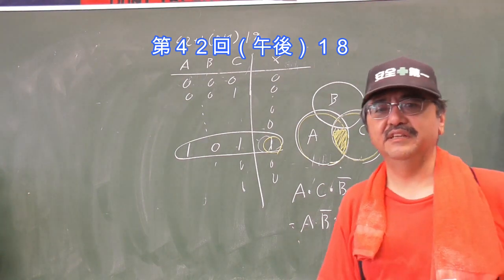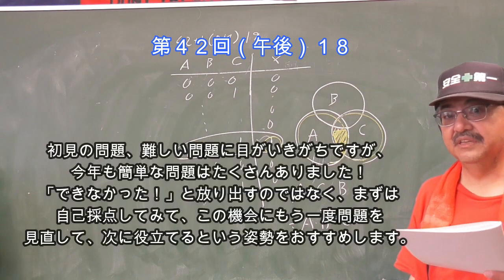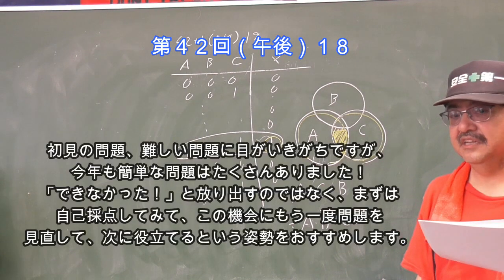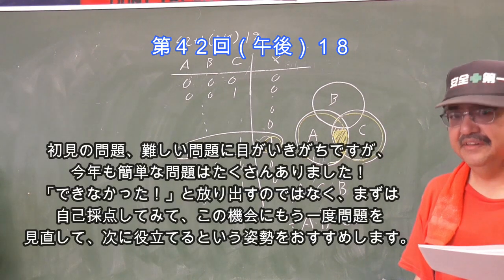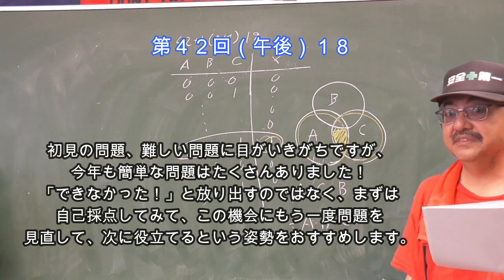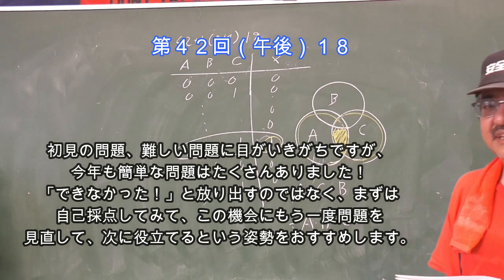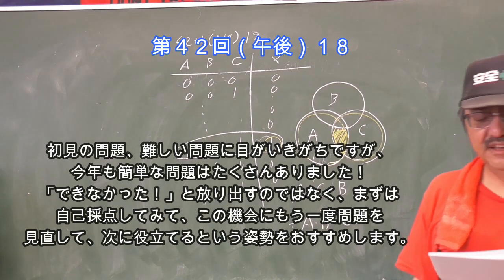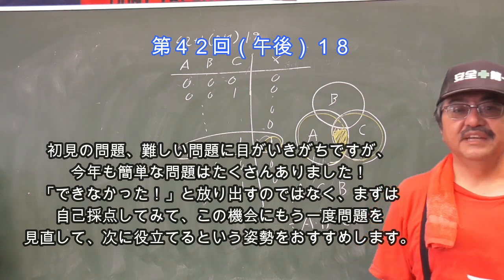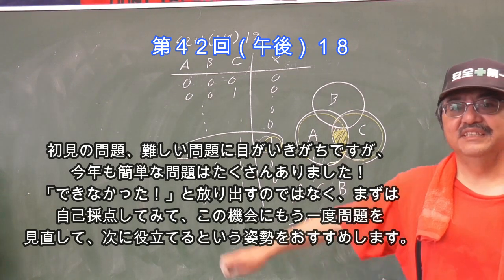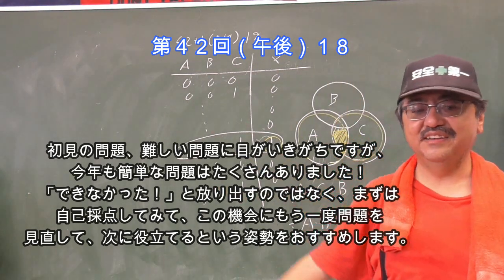以上じゃあそれだけです。大体13問ですね、電気電子情報含めてたった13問しかない。だからこれができなくても大してダメージになりませんが、目新しい問題が出てパニクらないようにしてください。よく見ると今年もそうですが簡単な問題はたくさんありましたね。それが確実に解ければ大丈夫ですよ。じゃあ次回は物理科学についてやってみたいと思います。じゃあ皆さんお疲れ様でした。